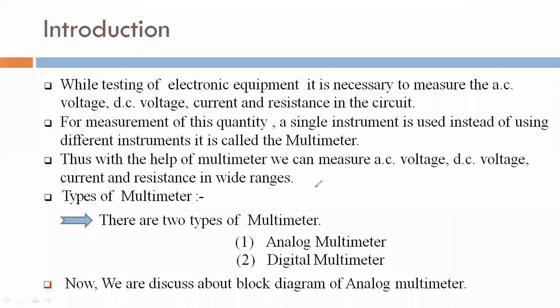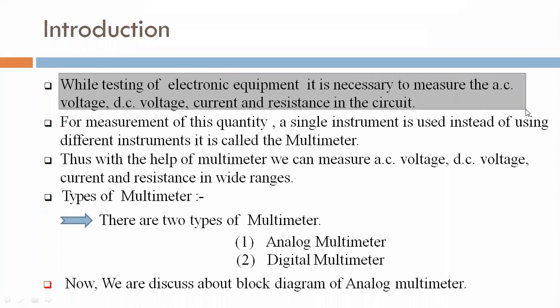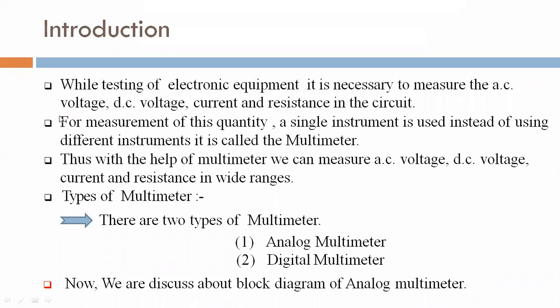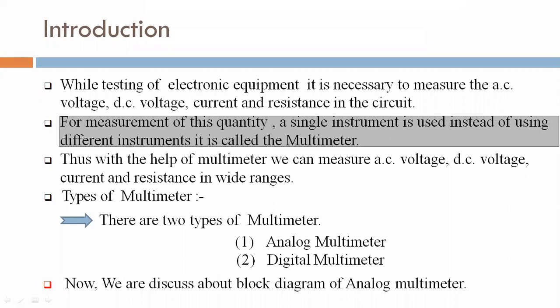Introduction to this topic: While testing electronic equipment, it is necessary to measure AC voltage, DC voltage, current, and resistance in the circuit. For measurement of these quantities, a single instrument is used instead of using different instruments. It is called a multimeter.